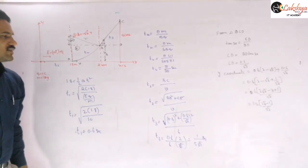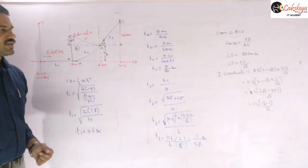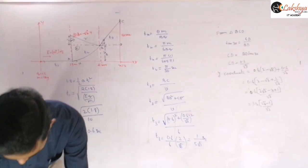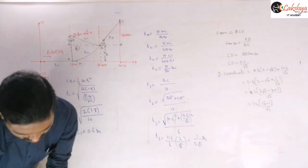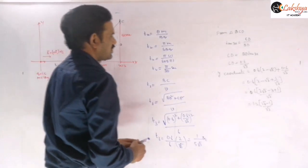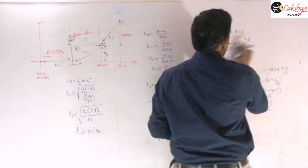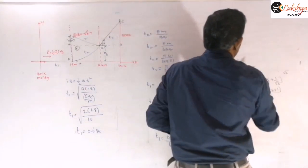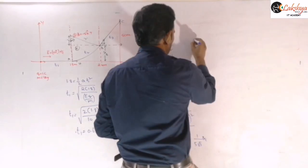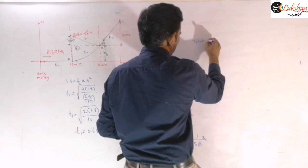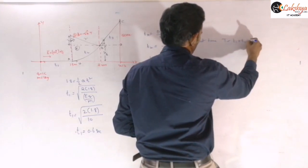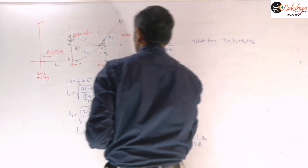The total time is T = t₁ + t₂ + t₃ = 0.6 + π/30 + 1/(5√3) seconds. Adding all three parts gives the total time for the particle to strike the screen.